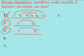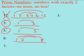Let's try 8. 1 times 8 is 8. 2 times 4 is 8. Does 3 go into 8? No. 3 does not go into 8. So I know my factor rainbow is done. I've got 4 factors. That's not 2. So I know that's not prime.